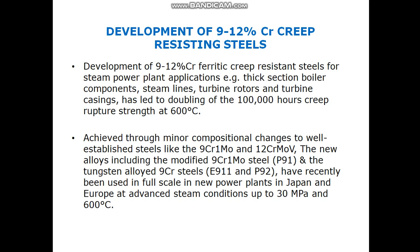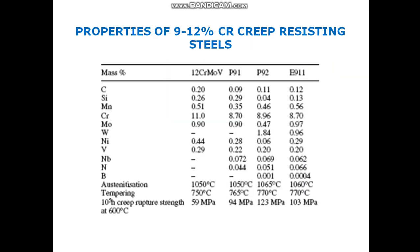Applications include thick section boiler components, pipe lines, steam lines, turbine rotors, and turbine casings. There is a composition comparison between 12CrMoV steel, P91, P92, and E911 — the tungsten-alloyed steel. Most elements like carbon, silicon, manganese, chromium, and molybdenum are common, but tungsten is found specifically in P92 and E911.